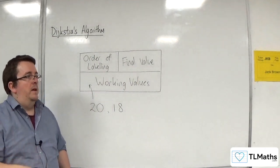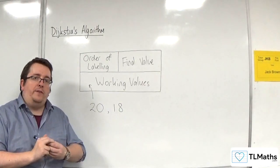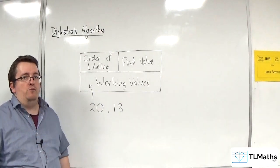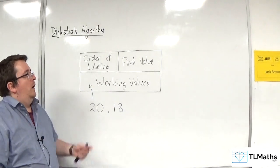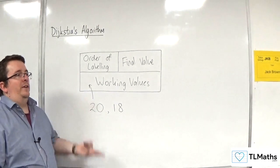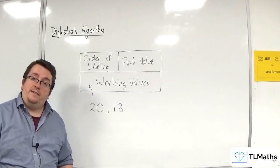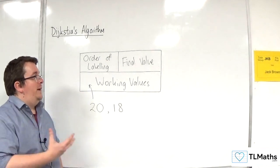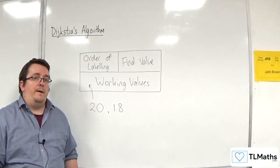We're going to have a box like this for each of the vertices as we run through the algorithm. Different exam boards might have slightly different ways of annotating with Dijkstra's algorithm, but this is the way that we use for OCR-MEI.